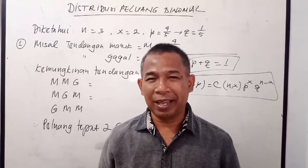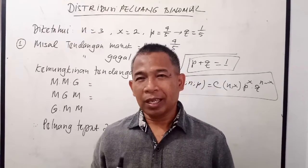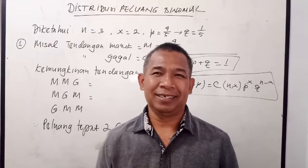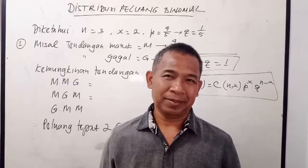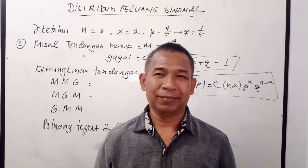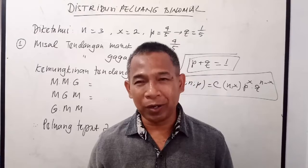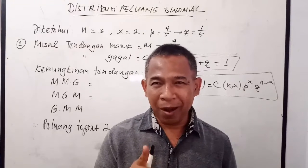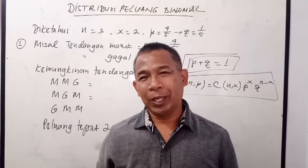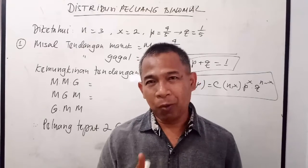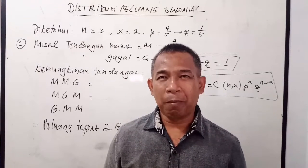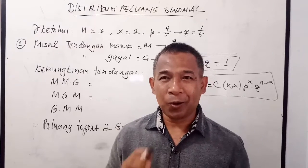Saya tuliskan sebuah contoh. Misalnya Iwan sedang melakukan latihan tendangan penalti sebanyak 3 kali. Jika peluang tendangannya berhasil masuk atau goal adalah 4 per 5, tentukan peluang Iwan memasukkan tepat 2 kali. Jadi Iwan melakukan 3 kali tendangan penalti, peluang masuk 4 per 5. Tentukan peluang Iwan melakukan tendangan goal tepat sebanyak 2 kali.